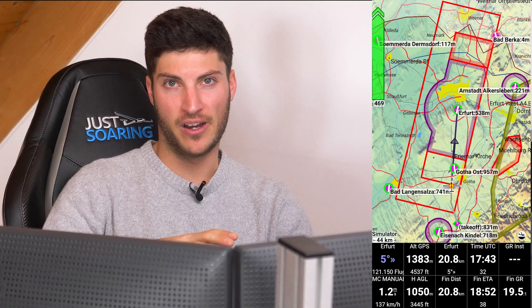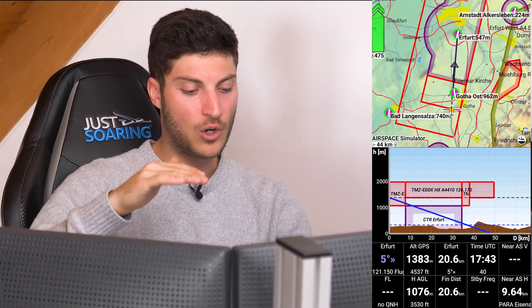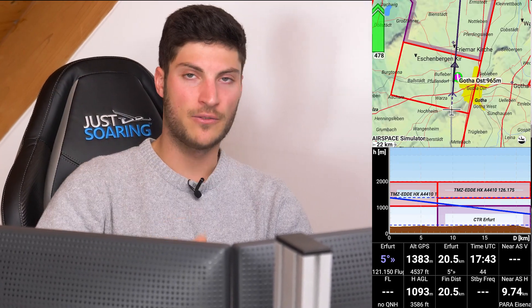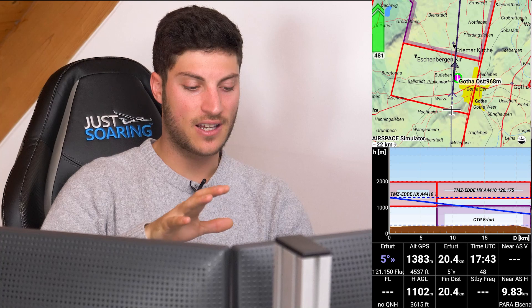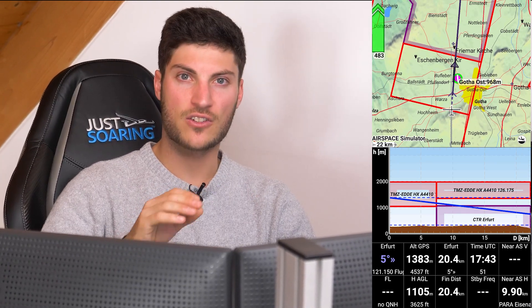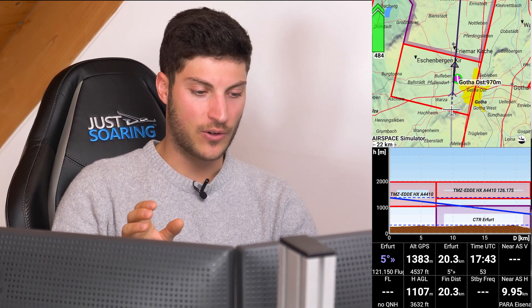Tip number four: it is so important to train using the software. There are two different options available. The first and easiest one is to use the simulator in XCSoar, where you can simulate that the glider is in the air and gliding in a specific direction. There you can see all the info boxes, the cross-section of the airspace, and so on.